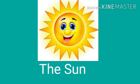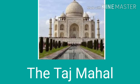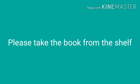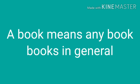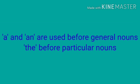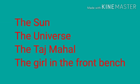For example, there is only one sun, right? So, we use 'the sun'. There is only one Taj Mahal, so we use 'the Taj Mahal'. If we say 'please take the book from the shelf', it means a particular book. And 'a book' means book in general — any book. So, 'a' and 'an' are used before general nouns, and 'the' is used before a specific or particular noun. For example: the sun, the universe, the Taj Mahal, the girl in the front bench, etc.